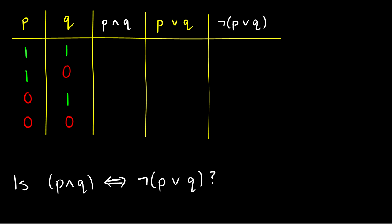Let's do the truth tables for all of these. First, P∧Q. When is P∧Q true? P∧Q is true only when P is true and Q is true. So it's going to be true in the first row and false in all the rest. The truth conditions for P∧Q are 1, 0, 0, 0. Now for P∧Q to be logically equivalent to ¬(P∨Q), that column would also have to be 1, 0, 0, 0. So let's see if that's the case.